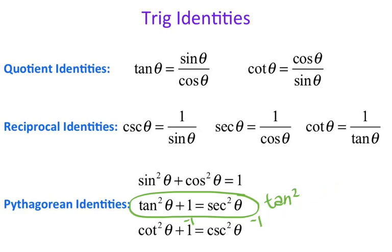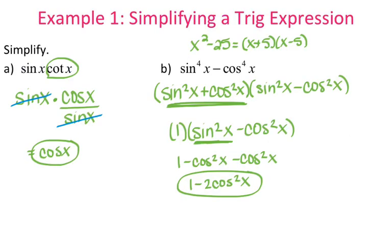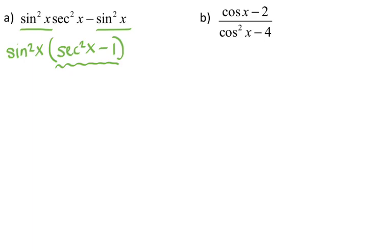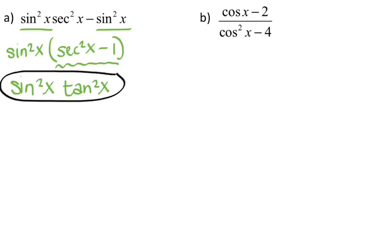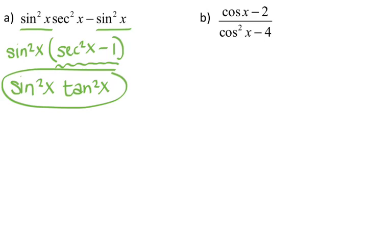There are a lot of substitutions and manipulations you're making with these identities. I like to call these trig puzzles — you're replacing and simplifying. So now we have sine squared of x times tangent squared of x, and I'm going to stop right here since the expression is simplified. There are other expressions you can get as a final answer, since there's more than one answer, but I'll stop here.